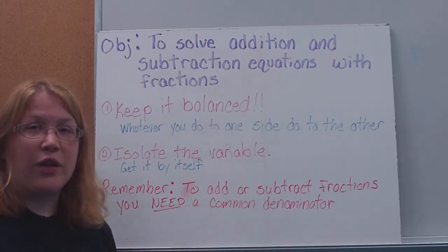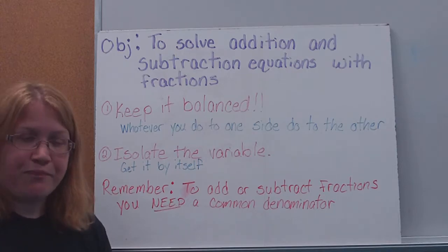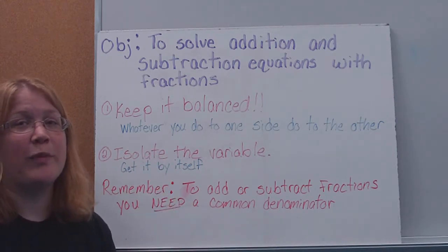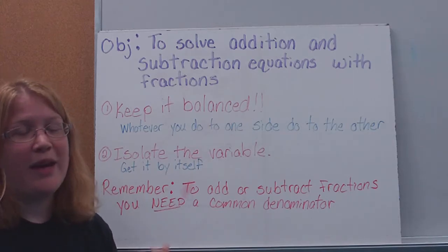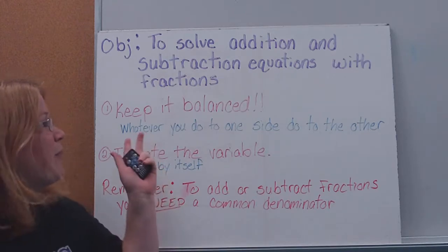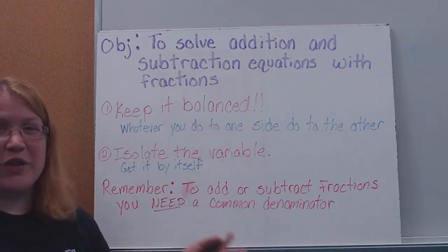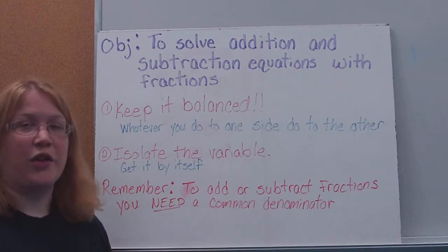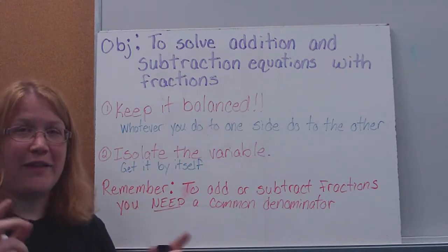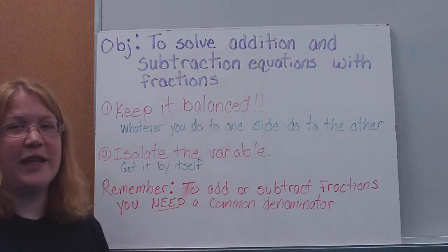So now we have to remember not only our rules for solving equations, which you're looking at and you're like, Ms. Bro, I'm so sick of seeing those two rules. I know them. Well, you're going to see them in the next two videos too. Have fun. So you know your two rules by now. Keep it balanced. Whatever you do to one side of an equation, you have to do to the other. The equal sign is your balance. And you're trying to isolate the variable. You want to get that variable by itself, then we know what it's equal to.